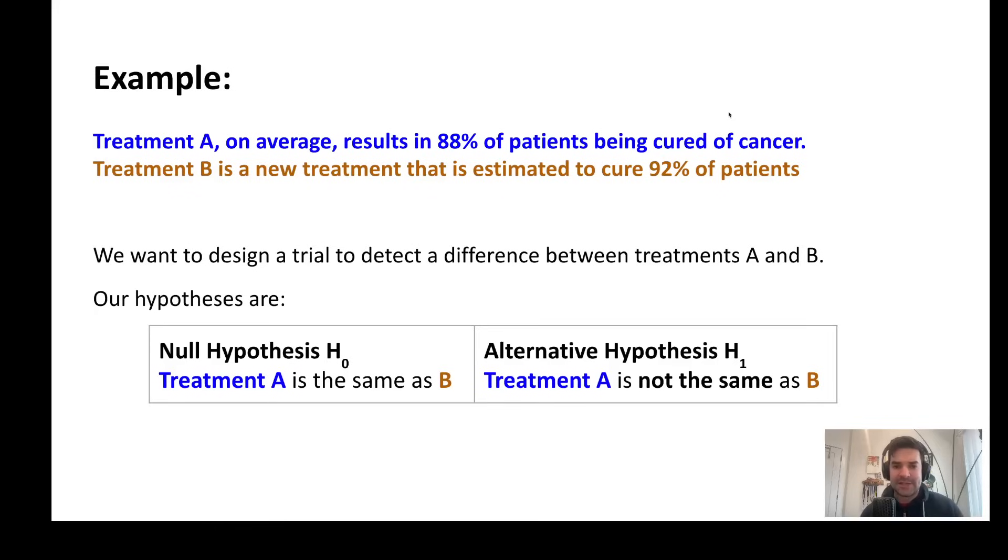So what we want to do in our study is we want to come up with first, what's our null hypothesis that treatment A is the same as B? And then we're going to conduct a study that hopefully is sufficiently large so that we will have the statistical power to reject the null hypothesis if indeed treatment A is not the same as treatment B.